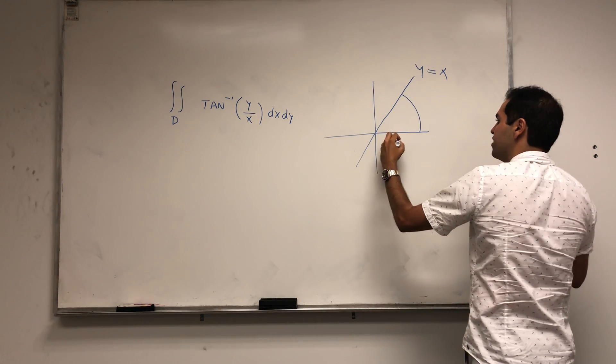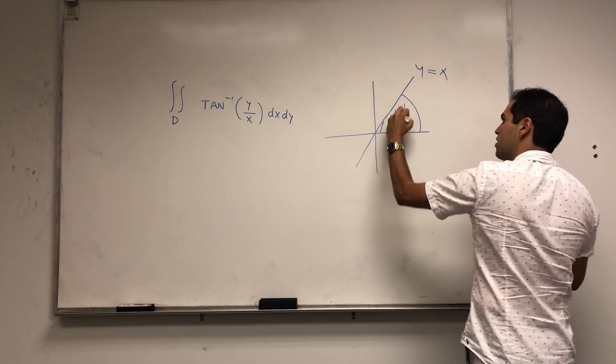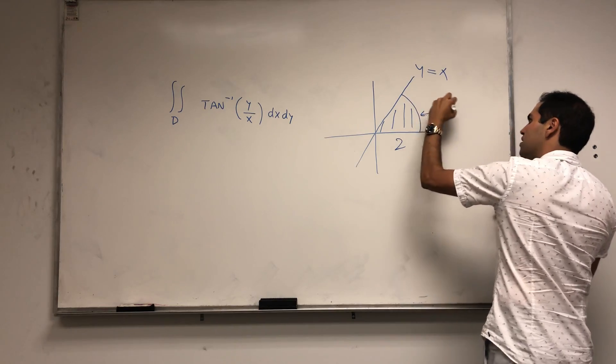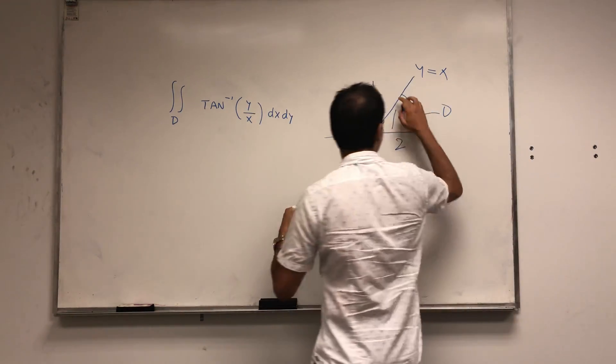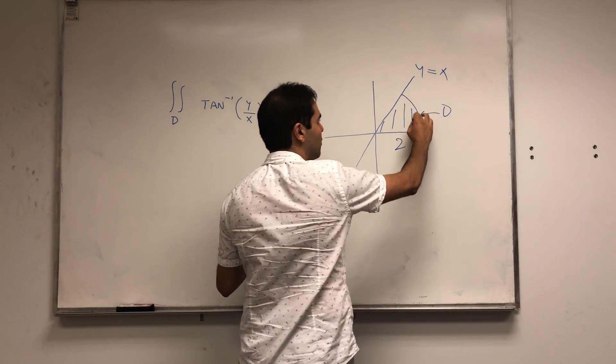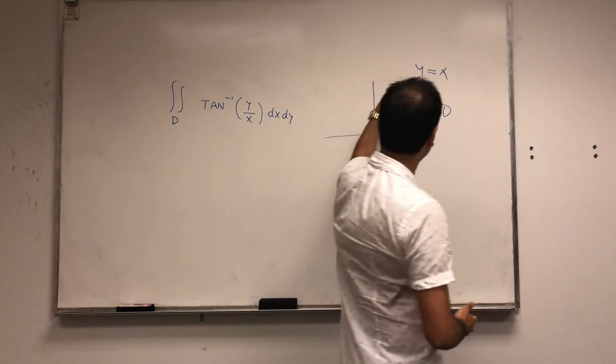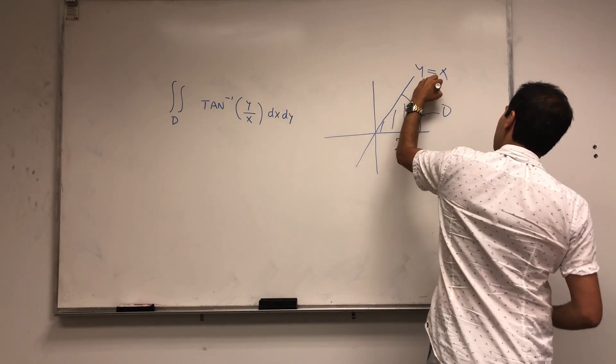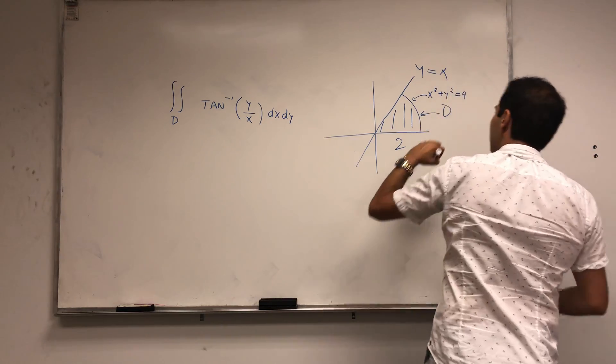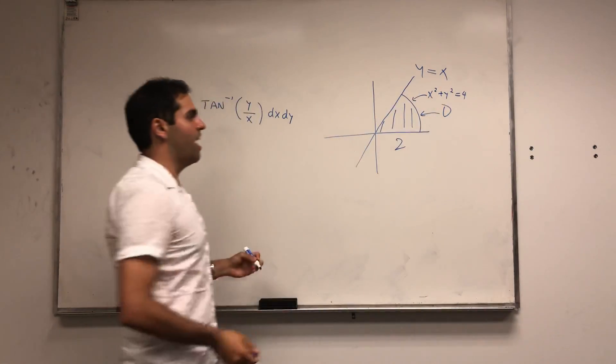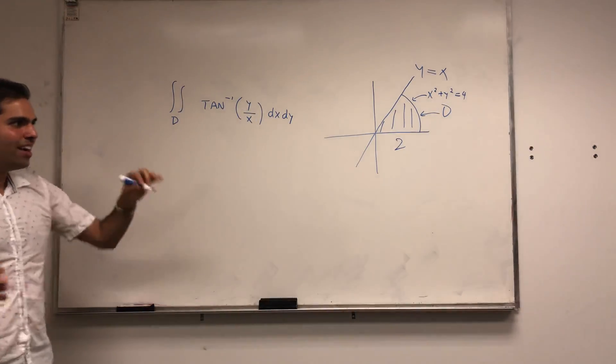The wedge has radius 2, so D is a circle wedge where this is the circle x squared plus y squared equals 4, and it's underneath the line y equals x and the positive axis.